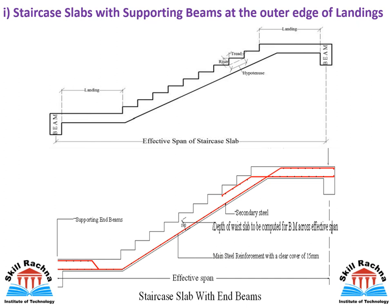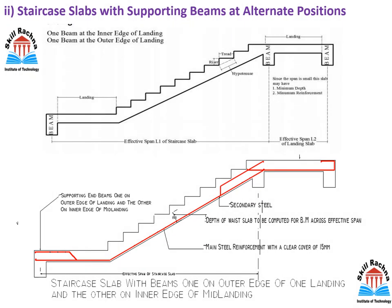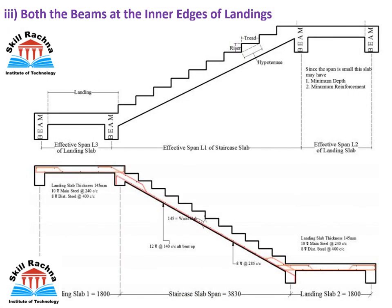There are three types of dog leg staircase systems. The first is a staircase slab with supporting beams at the outer edge of the landing — the beams act as supporting members at the outer edge, and you can pause the video to observe the reinforcement pattern. The second type has supporting beams at alternate positions — one at the outer edge and one at the inner edge. The third type has both beams at the inner edge of the landing, and accordingly the reinforcement pattern varies.